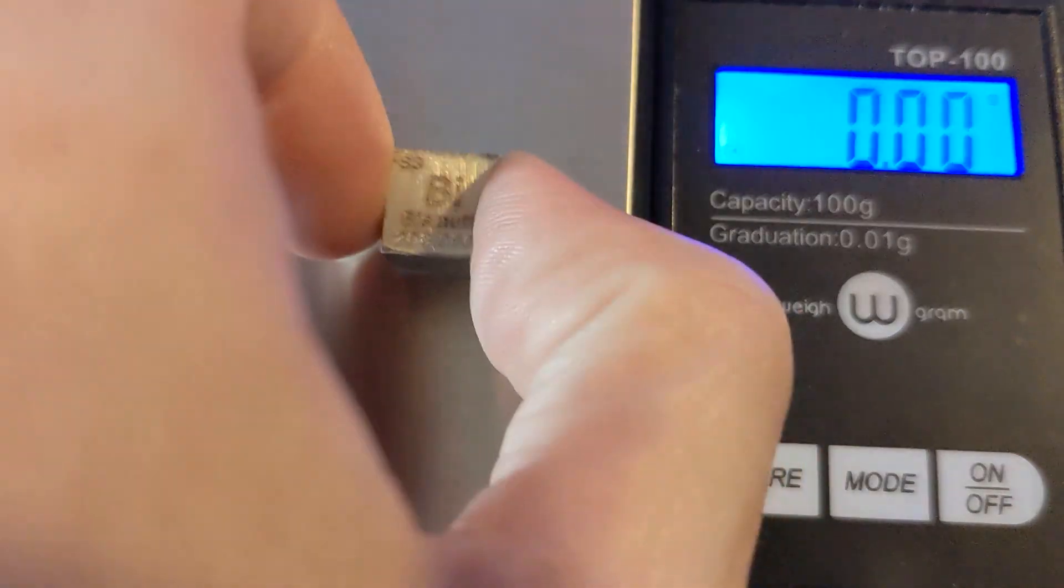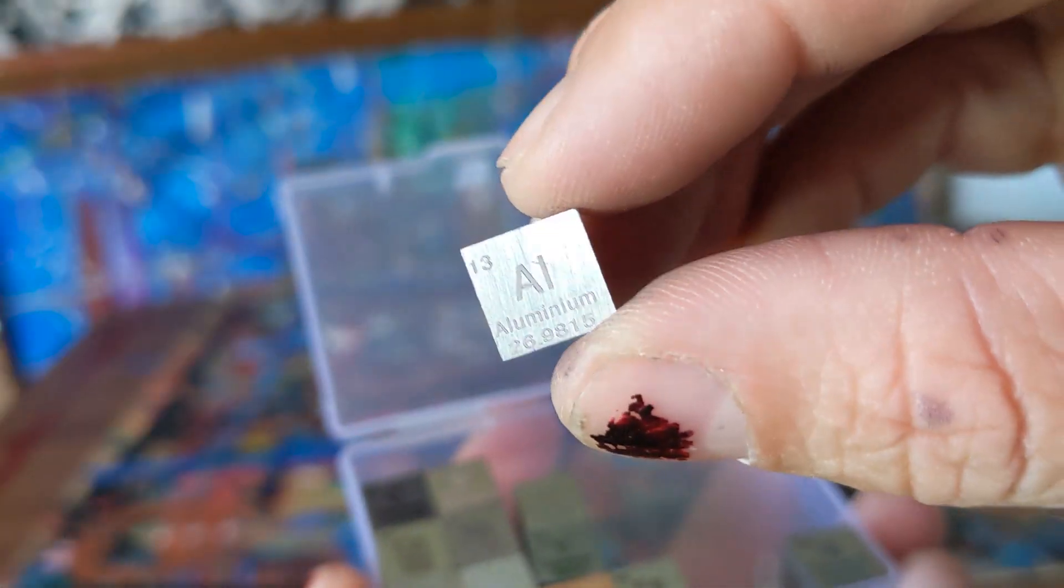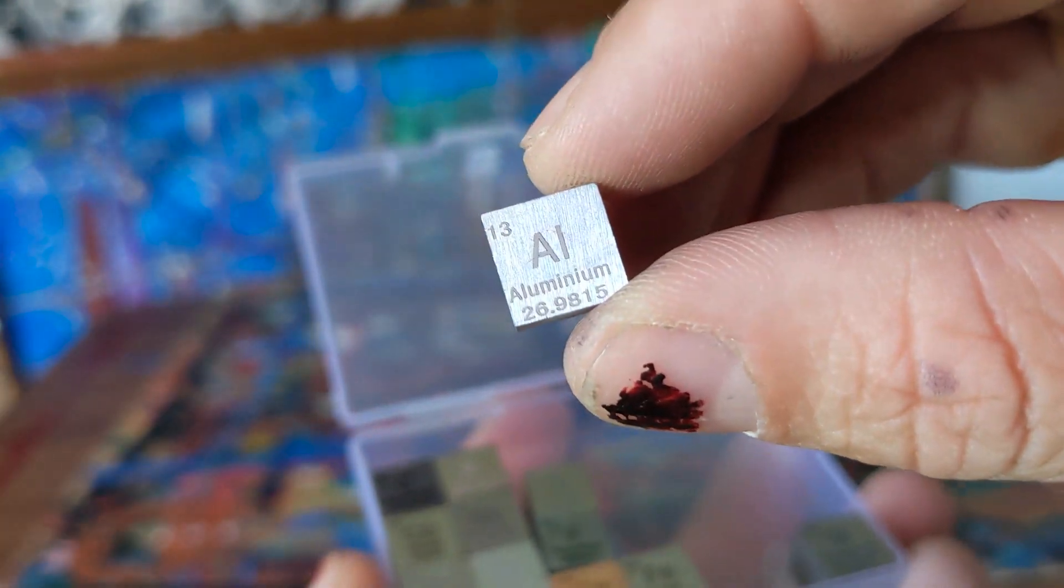These are for crafts and for some hands-on learning. It was really interesting to be able to hold a sample of each metal and compare them. You pick up aluminum and then you pick up tungsten and you'd be shocked at how much heavier that little block is.